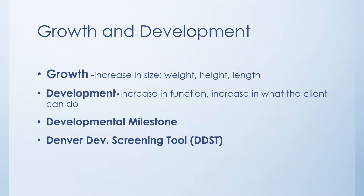Development in humans tends to occur in a cephalocaudal, or head-to-toe, fashion. We also sequence our skills from a proximal area of the body out to the distal areas. So a proximal-to-distal sequence and a cephalocaudal direction are both important principles of development.